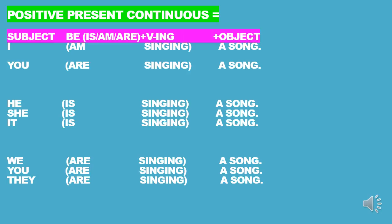For the subject 'you', the verb to be should be 'are', and the verb-ING form of 'sing' becomes 'singing', with the object 'a song'. For the third person singular, the verb to be should be 'is'. Then 'sing' is transformed into ING form, becoming 'singing', and the object is 'a song'.